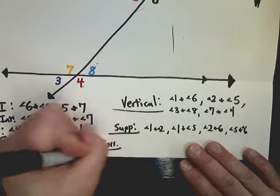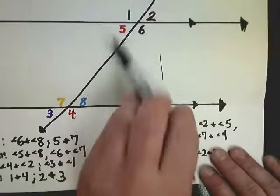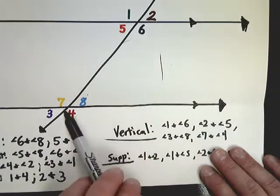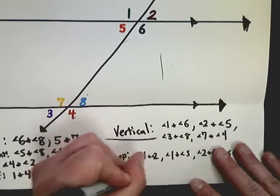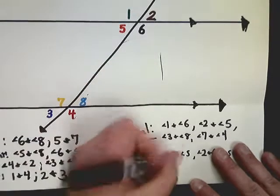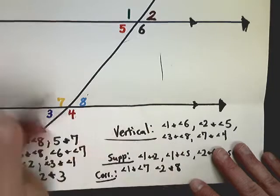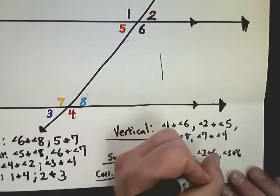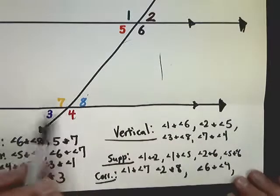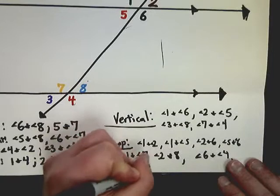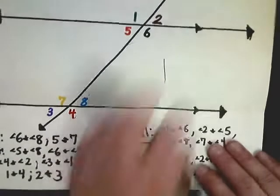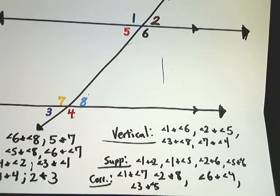Corresponding angle pairs are: 1 and 7 — because both are in the top-left of their respective crossings — 2 and 8, 6 and 4, and 3 and 5. They're in the same basic location, just at different crossings.